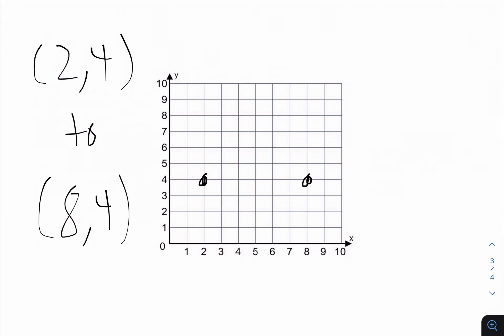So first, we know that both of them are on the same line because they have the same y-coordinate of 4. So all we have to do is just do 8 minus 2, which are the x-coordinates, and we get 6. So that means that the distance between these two points is equal to 6 units.